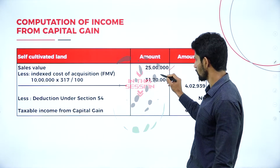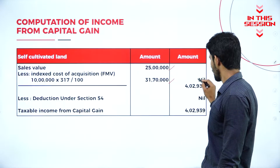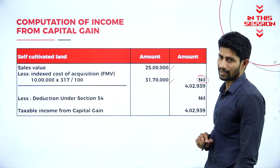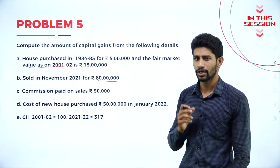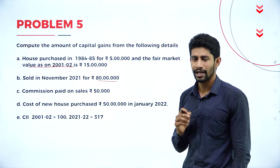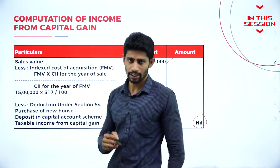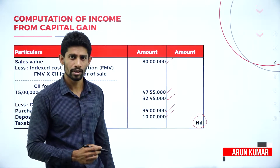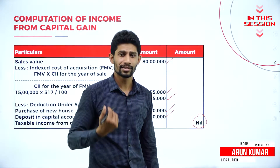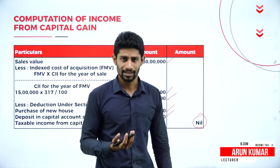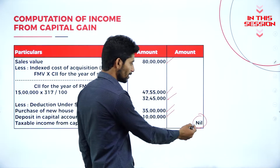If the indexed cost of acquisition is more than the sales value, the taxable value comes to nil. Based on fair market value, you find the indexed cost of acquisition of a particular property. The investment amount under Section 54 is more than whatever income is received by selling the asset, so the taxable income will be nil.